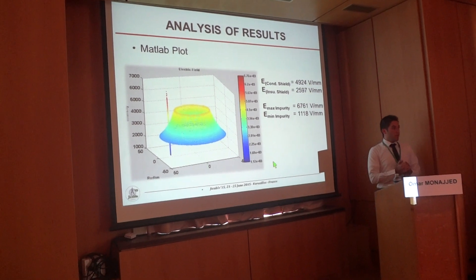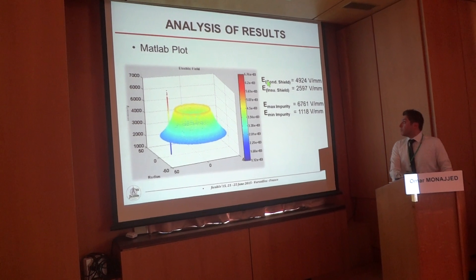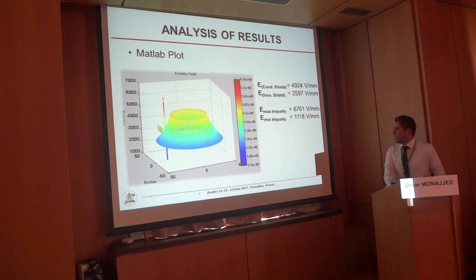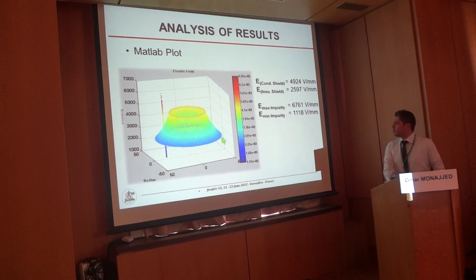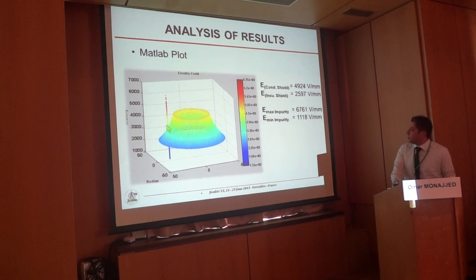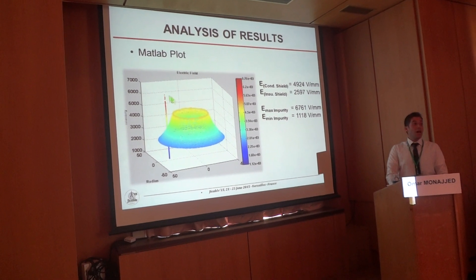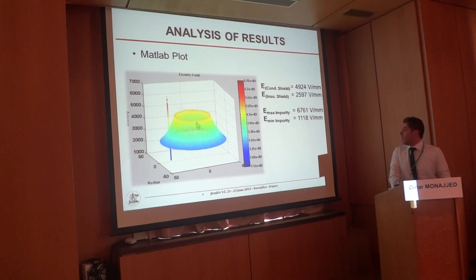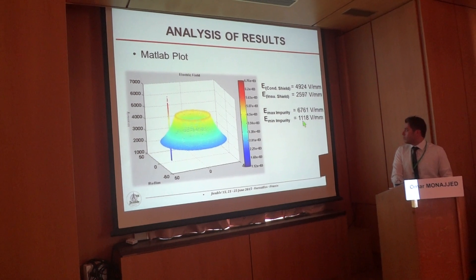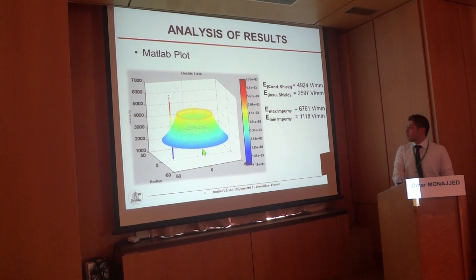To better understand, we apply the results in MATLAB in 3D. The conductor shield stress is 4124 V/mm. The outer semi-con stress is 2597 V/mm. At the impurity, we have a maximum stress of 6761 V/mm, which is even higher than the stress at the inner semi-con. Also at the impurity, the minimum stress is 1118 V/mm, which is even lower than the stress at the outer semi-con.